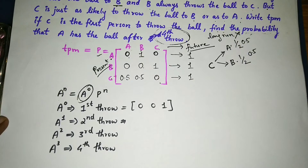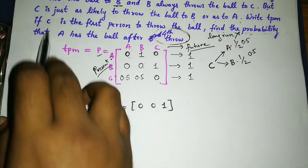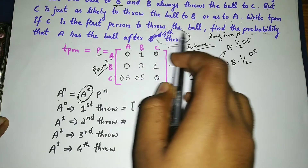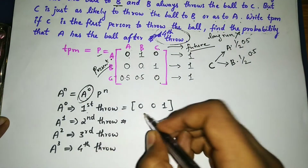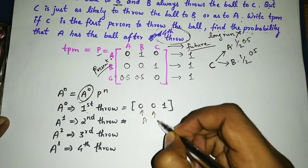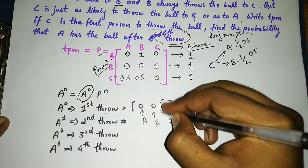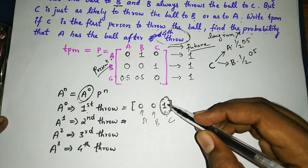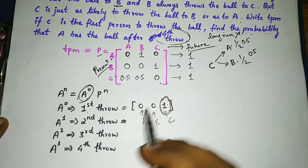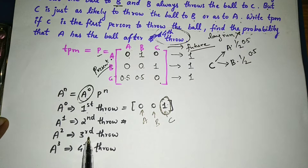Before solving, one more statement is given: C is the first person to throw the ball. So the initial state vector a^0 is [0, 0, 1] — representing A, B, and C respectively — since C has the ball at the start.